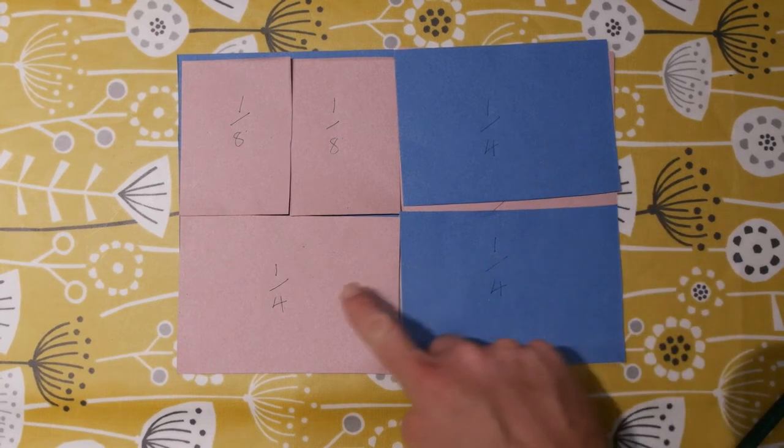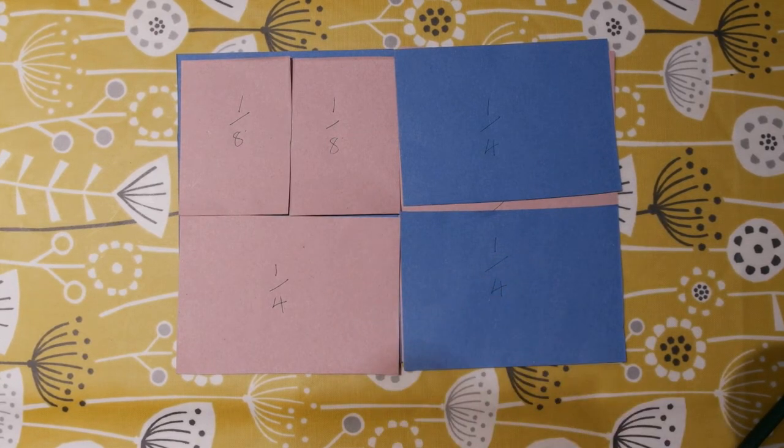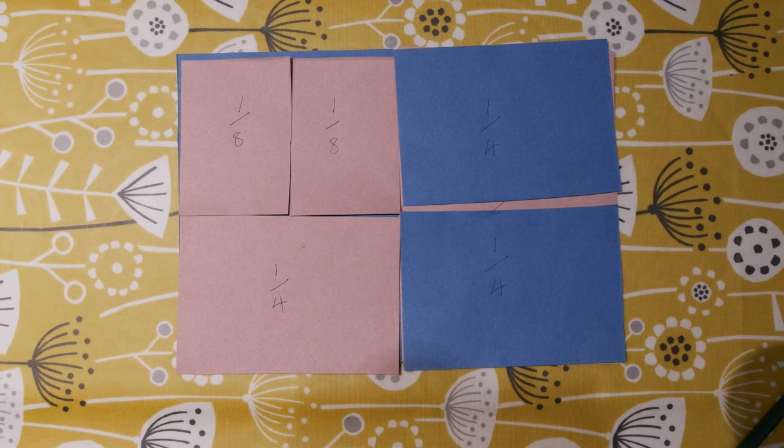So one, two, three quarters plus two eighths will also make a whole. And keep going.